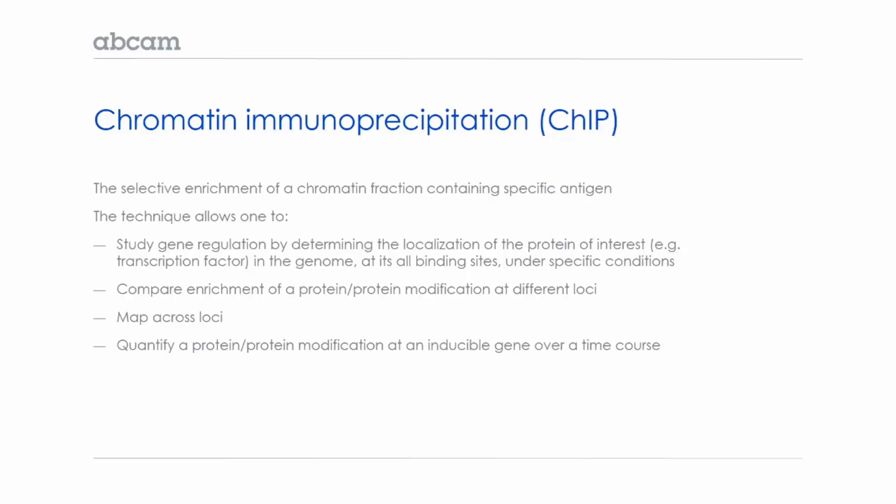Chromatin immunoprecipitation, or ChIP, is the selective enrichment of a chromatin fraction containing a specific antigen. This antigen is a specific protein of interest, and you enrich for this protein bound to DNA by pulling it down using an antibody.